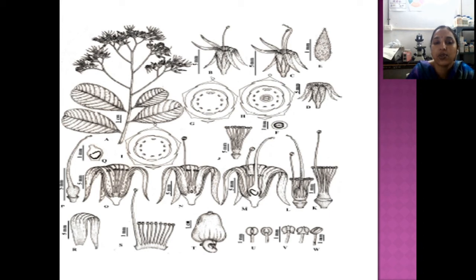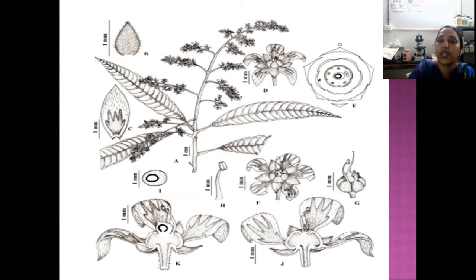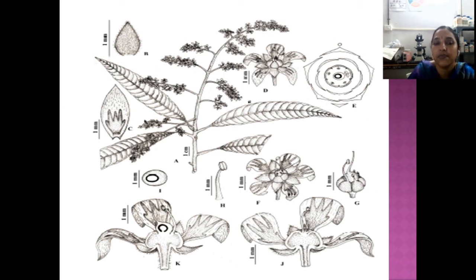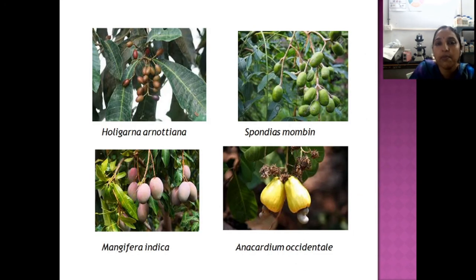This is the floral diagram of Anacardium occidentale. You can see the stigma, the staminodes, and the gynoecium. Notice that there is only one fertile stamen; all nine others are sterile staminodes. In the floral diagram of Mangifera indica, you can see a single style and stigma, a single fertile stamen, and a unilocular ovary. Very importantly, you can see the presence of the disc at the center — this is a very significant character of this family.